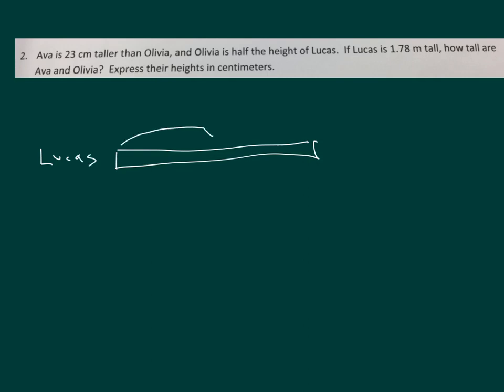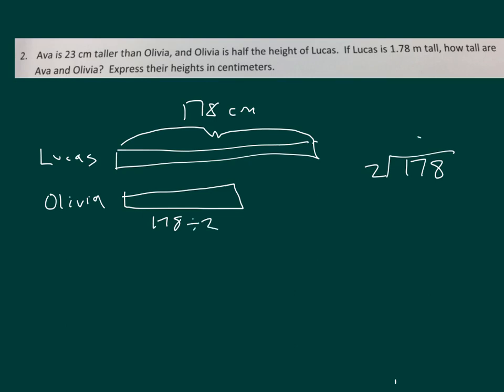And he's 1.78 meters, or 178 centimeters tall. Since I know Lucas is, it says Olivia is half the height of Lucas. So I'm taking a half of 178. I'm taking 178, dividing it by 2 to be able to get Olivia. 8 times 2 is 16. 17 minus 16 is 1. Bring down the 8. 18 divided by 2 is 9. 9 times 2 is 18. And 18 minus 18 is 0. 89 centimeters. That's how tall Olivia is.